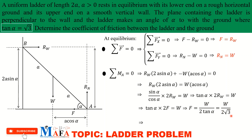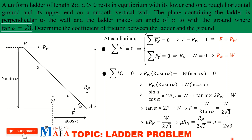The frictional force can be written as F = μ·R_n, where μ is the coefficient of friction and R_n is the normal reaction at the ground. Substituting: μ·R_n = W / (2√3). Since R_n = W, the W's cancel and we get μ = 1 / (2√3). Rationalizing by multiplying top and bottom by √3, the coefficient of friction is μ = √3 / 6.